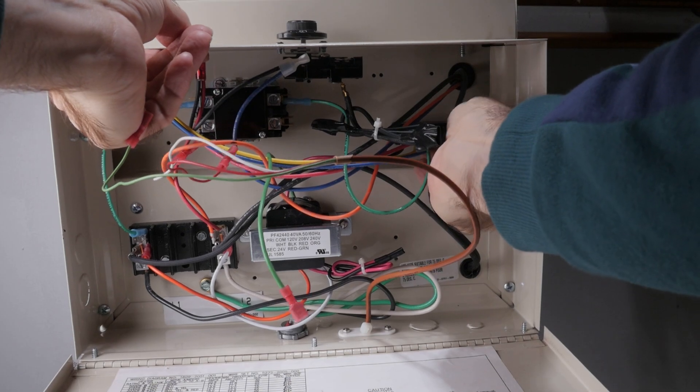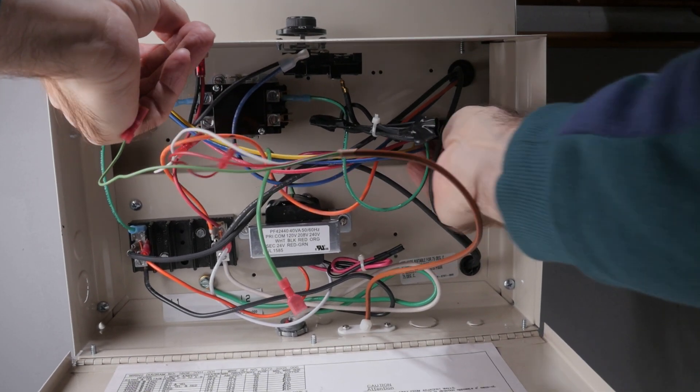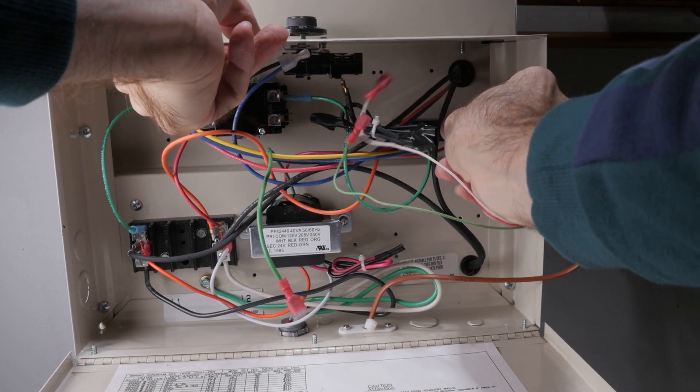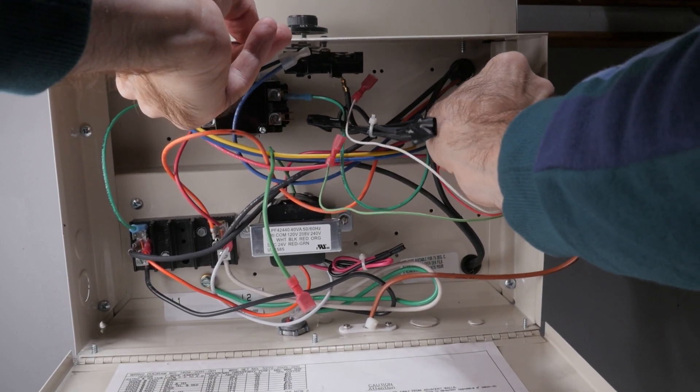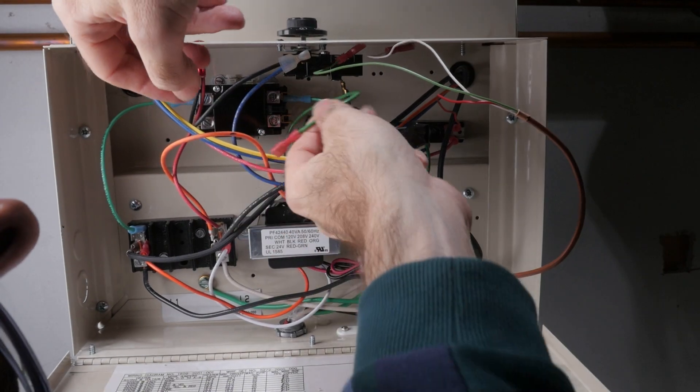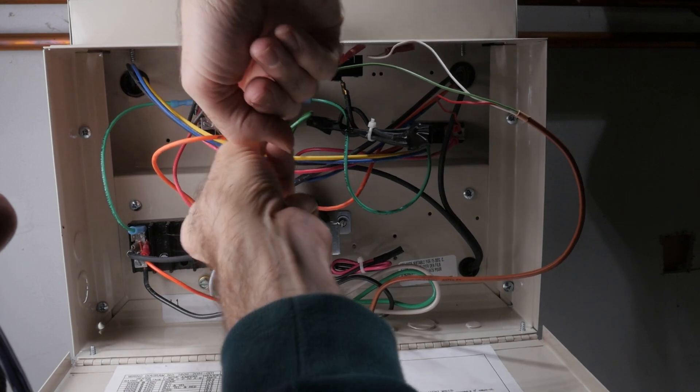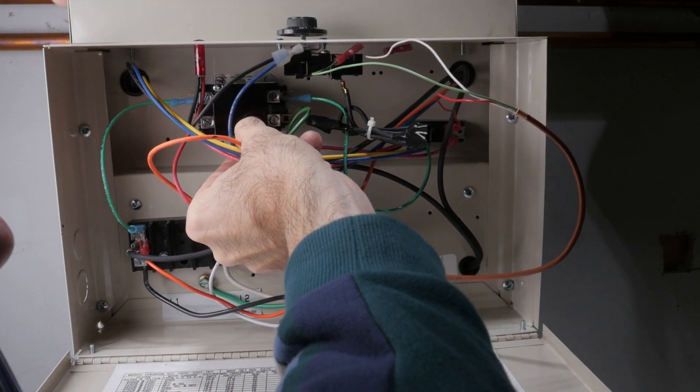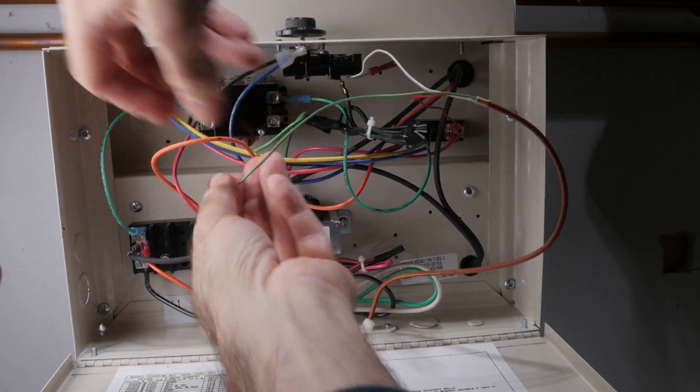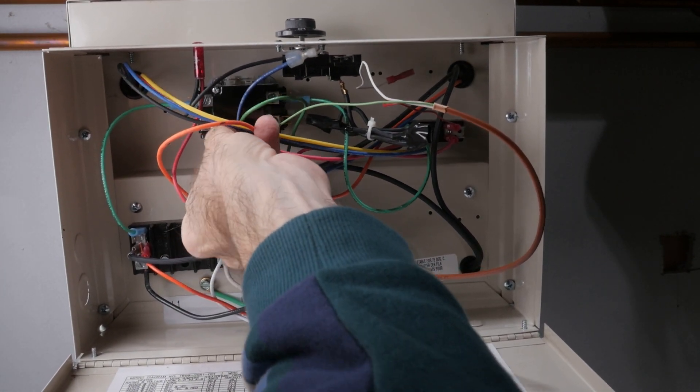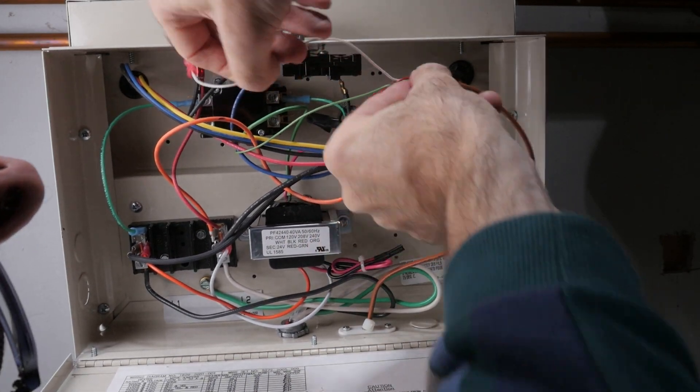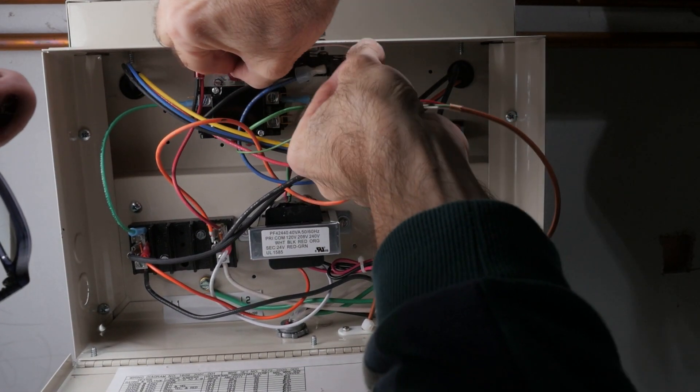Conveniently, there was a spare unused mounting lug and I used it to connect the red 24V secondary lead from the transformer and the red R lead from the thermostat together. The green 24V transformer secondary lead is next connected to one side of the coil on the contactor. The green C lead from the thermostat is connected to that same side of the coil, effectively connecting the two leads together. Finally, the white W lead from the thermostat is connected to the other side of the contactor coil.